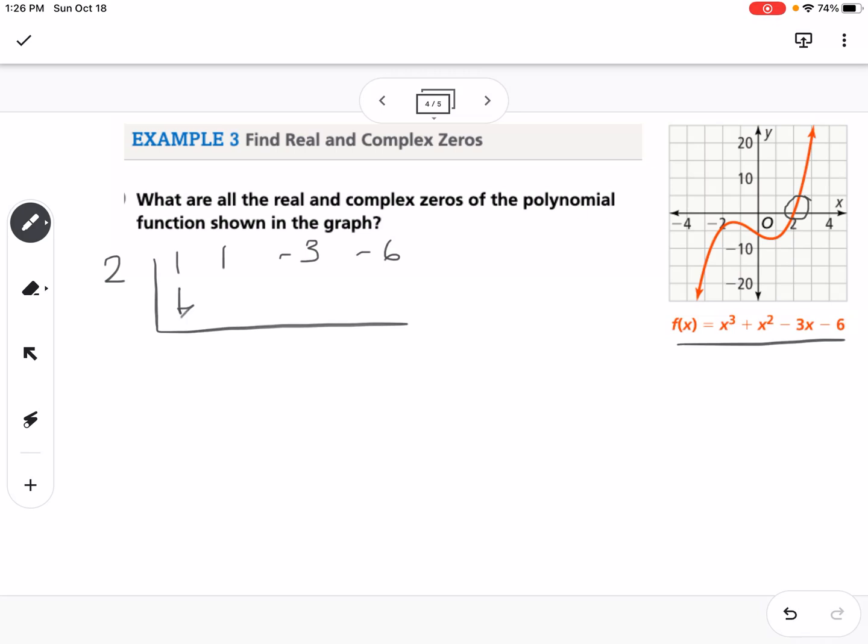So if I bring down the 1, this would be 2, 3, 6, 3, 6, so that worked. So that means that 2 is a zero. So now what I'm left with is x squared plus 3x plus 3.